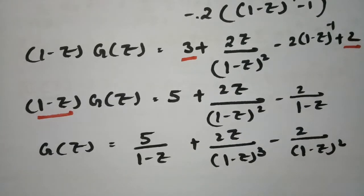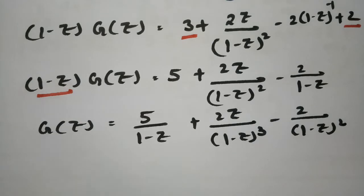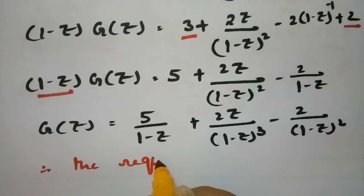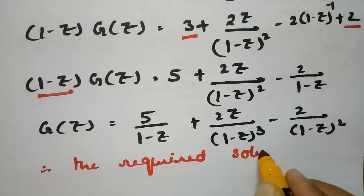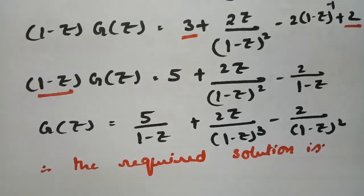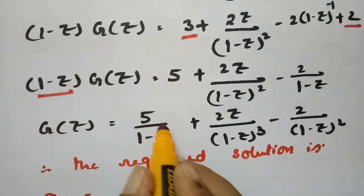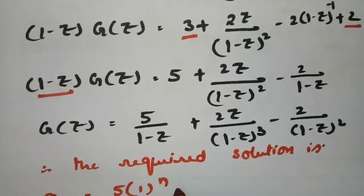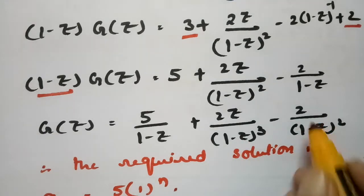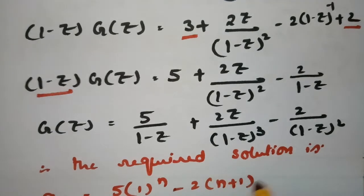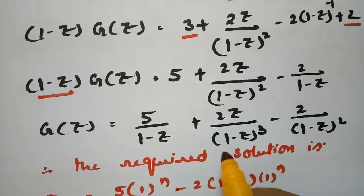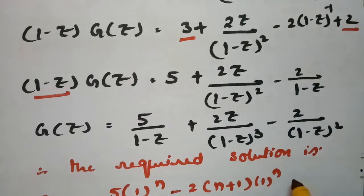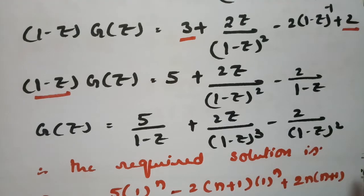Therefore the required solution can be written as: aₙ = 5·(1)ⁿ − 2(n+1)·(1)ⁿ + 2·(n(n+1)/2)·(1)ⁿ. Using the generating function identities: 1/(1−z)³ corresponds to n(n+1)/2 and 1/(1−z)² corresponds to (n+1).